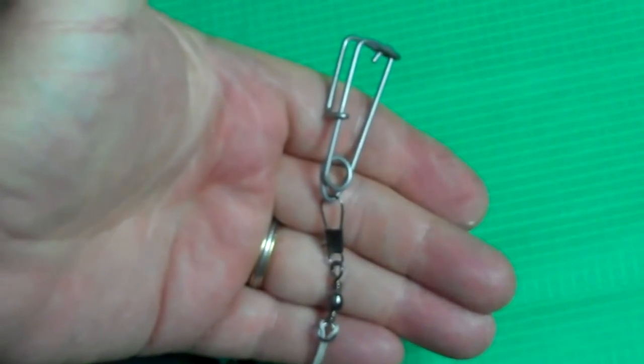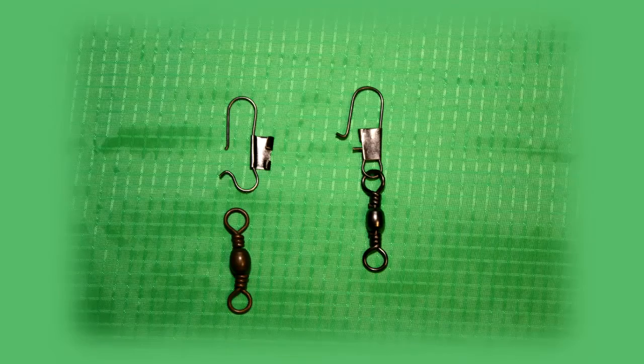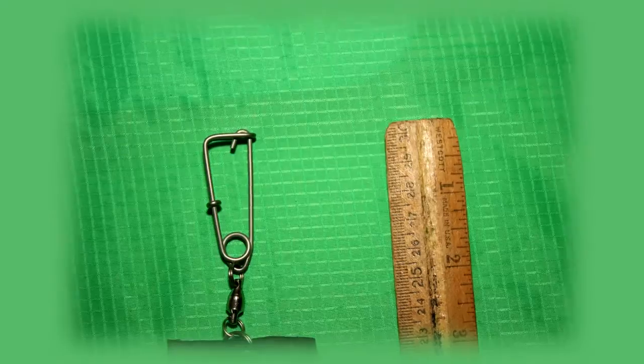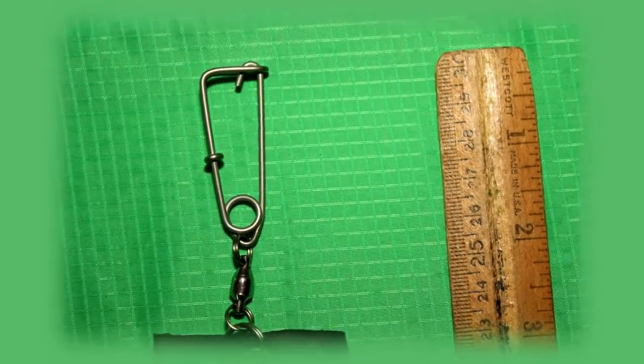If you like a more refined look, you can remove the spring closure and substitute a split ring between the trotline clip and your swivel.